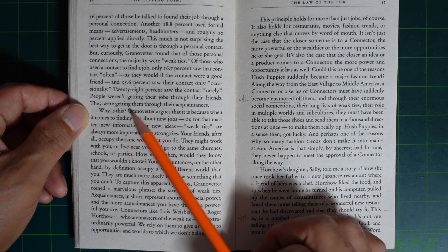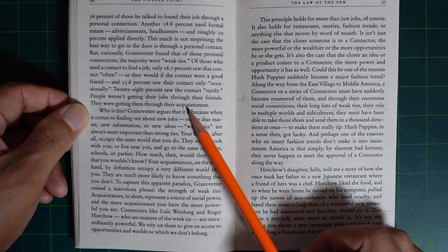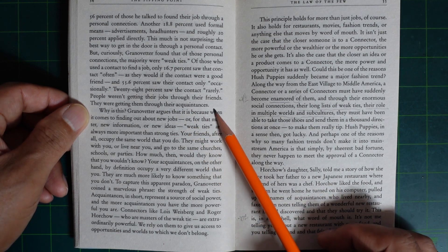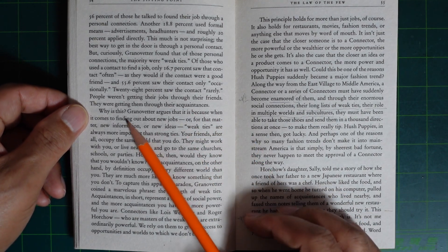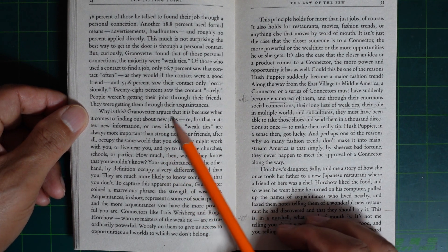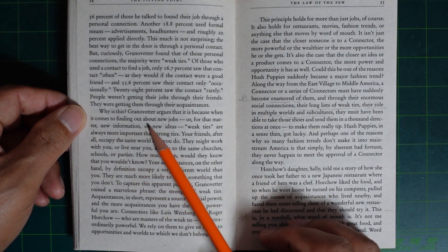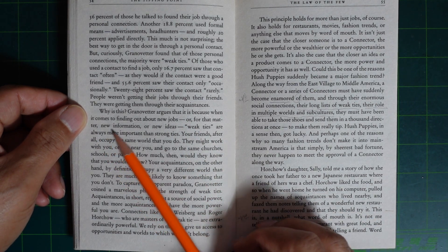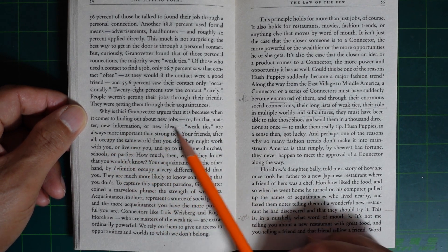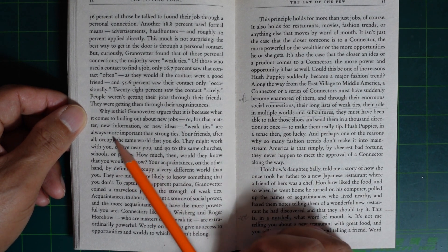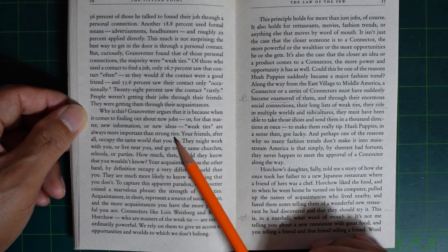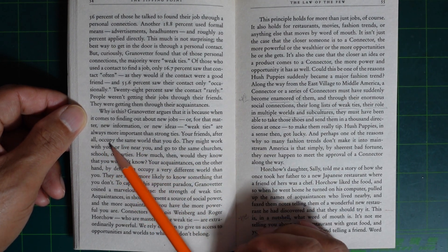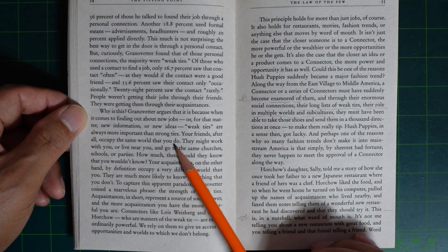People weren't getting their jobs through their friends; they were getting them through their acquaintances. Why is this? Granovetter argued that when it comes to finding out about new jobs or new information or new ideas, weak ties are always more important than strong ties. Your friends, after all, occupy the same world that you do.